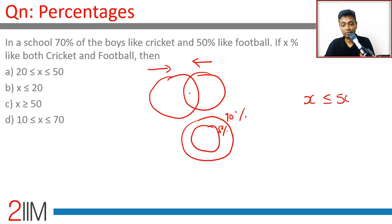x is less than or equal to 50%. When will x be minimum? When the two circles are pushed out to the extent possible. What's the maximum they can be pushed out? When there's nothing outside—this should become zero.